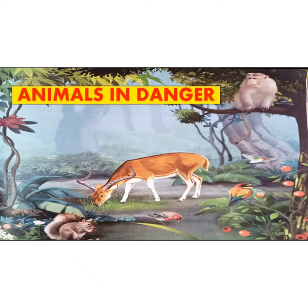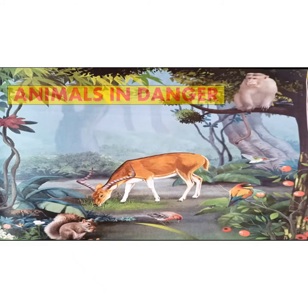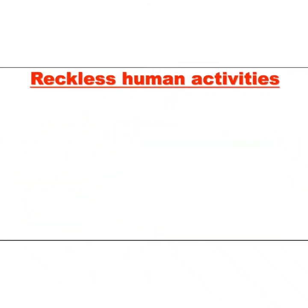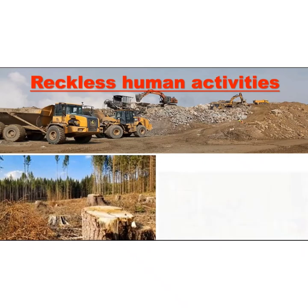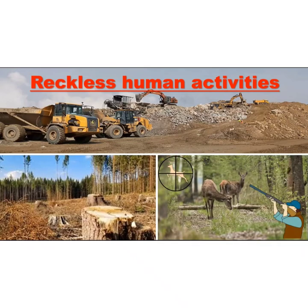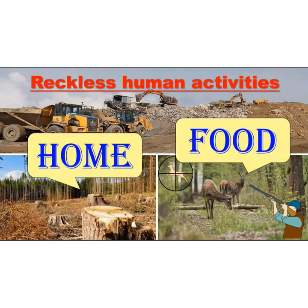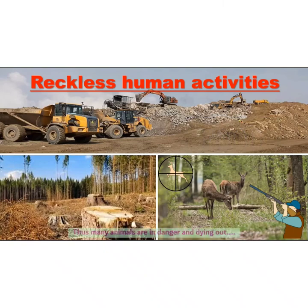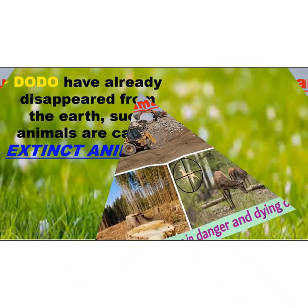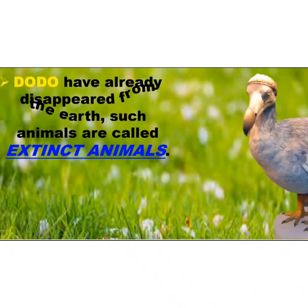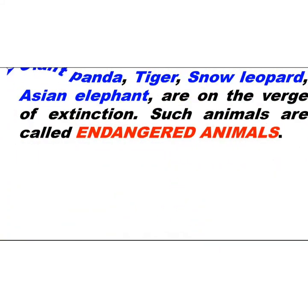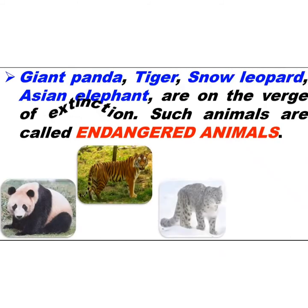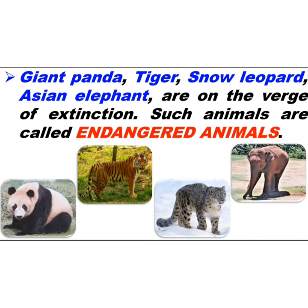Animals in danger: despite several adaptations, the lives of several animals are in danger because of destructive human activities such as mining, destruction of forests, and hunting and killing of animals. By doing so, we are taking away the home and food of many animals. Thus, many animals are dying out. Some animals like the dodo have already disappeared from the earth — such animals are called extinct animals. Animals such as the giant panda, tiger, snow leopard, and Asian elephant are on the verge of extinction and are called endangered animals.